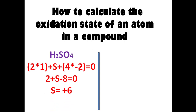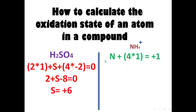Let's take NH₄⁺, which is ammonium. Ammonium has nitrogen with an unknown oxidation state, added to four hydrogen atoms. Ammonium has an overall charge of positive one, so the summation of oxidation states of all atoms equals positive one. We do some math and then we find nitrogen to be minus three.